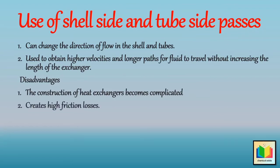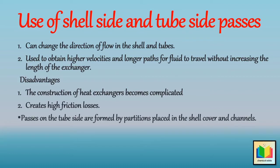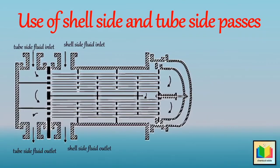Passes on the tube side are formed by partitions placed in the shell cover and channels. When we use a single pass partition on the tube side, the tube side fluid flows twice through the heat exchanger. Hence, the pass partition divides the tubes equally into two sections.